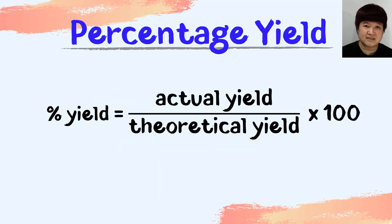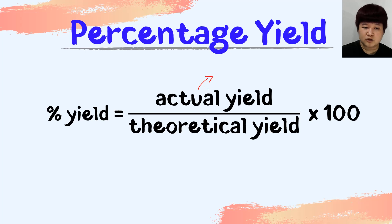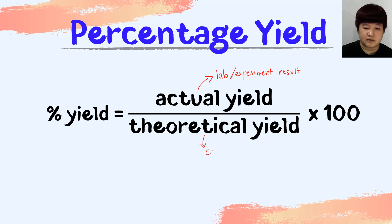When you combine the two, you get the formula for percentage yield: percentage yield equals actual yield over theoretical yield times 100. Bear in mind, actual yield is the lab or experimental result you obtain, and theoretical yield is the one you calculate from your balanced equation.